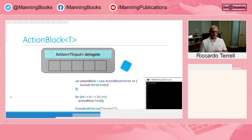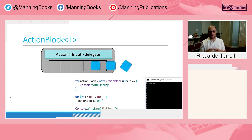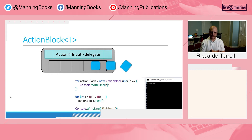Another building block is the action block in TPL Dataflow. It is used to execute a given callback for any message sent into it. You can think of this block logically as a buffer for data combined with a task for processing the input values. The action block is a target block — you send messages to it, and when a message is received it reacts and calls an internal delegate that you inject. Similar to a for-each loop, the delegate executes for all the elements you pass into it.